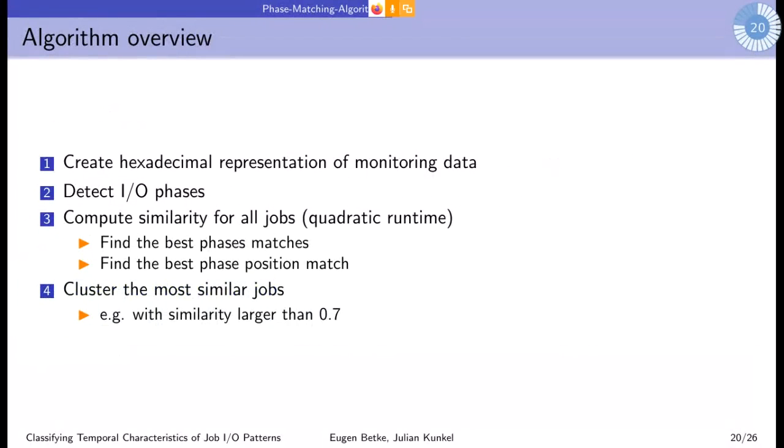So what happened is we grouped similarities for all jobs and grouped them and ended up in 19,000 clusters. So this is too much. It was a little bit disappointing.